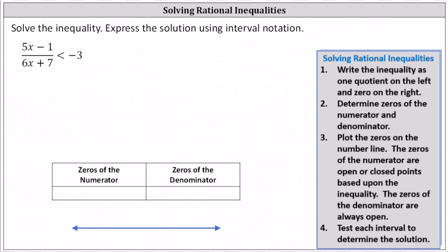We want to solve the given rational inequality and express the solution using interval notation. The first step is to write the inequality as a single quotient on the left and zero on the right. To do this, we first add three to both sides and write the inequality as the quantity five x minus one divided by the quantity six x plus seven, plus three divided by one, less than zero.